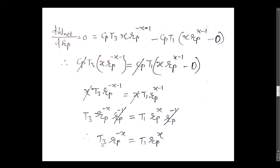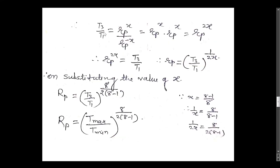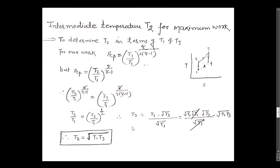Finally, we get T3 × Rp raised to minus x is equal to T1 × Rp raised to x. Therefore, T3 upon T1 is equal to Rp raised to x upon Rp raised to minus x. Simplifying, Rp is equal to (T3 upon T1) raised to 1 upon (2x). On substituting the value of x, the optimum pressure ratio is equal to (T3 upon T1) raised to gamma upon [2(gamma minus 1)], where T3 is T_max and T1 is T_min. This is the expression for the pressure ratio that gives maximum net work.